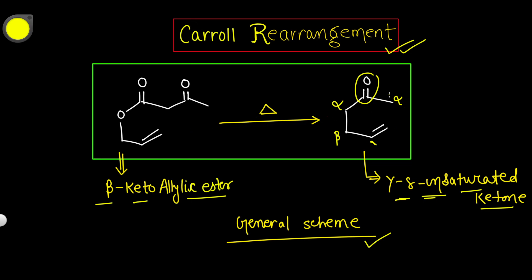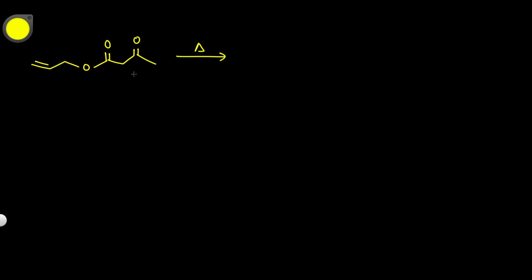Now let's look at the mechanism — how the rearrangement takes place. We have the substrate with a double bond, and we apply heat. First of all, we have to tautomerize this compound, because if we can't tautomerize, the compound will not undergo rearrangement.